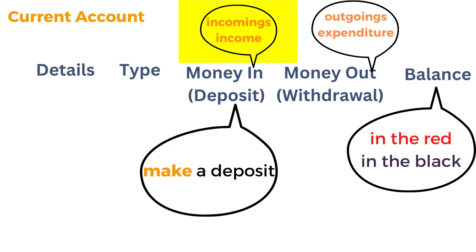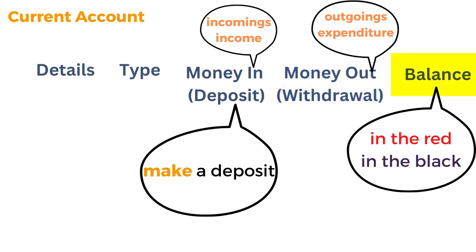For most of us, incomings will be our salary or wage. Or if you've sold something — maybe on eBay — you will have money coming into your account. Then there'll also be a list of money going out of your account. These are withdrawals, your outgoings, and this is your expenditure. When you balance the money in against the money going out, there's a figure left in total in your bank account — and that can hopefully be in the black, a plus amount, or if it's a minus amount, it can be in the red.